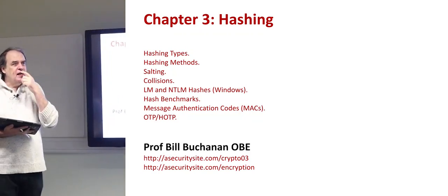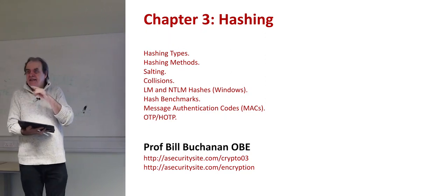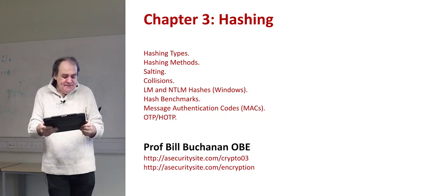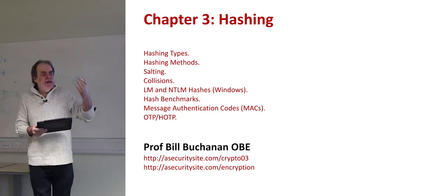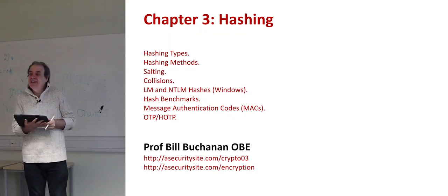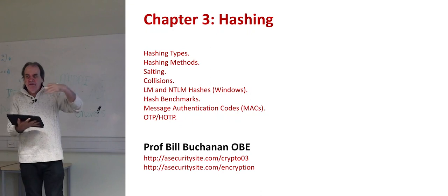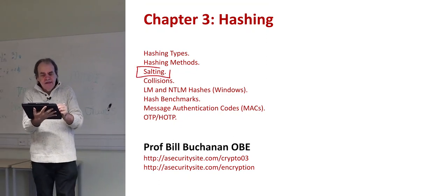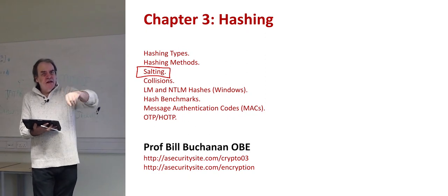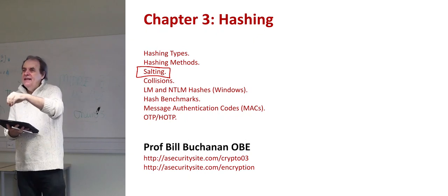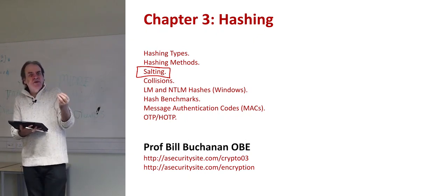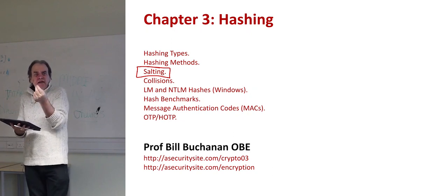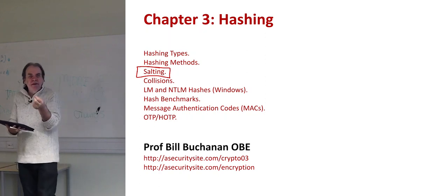Week 3. Last week we did symmetric key encryption; this week we're going to look at hashing and MACs. We'll look at the fundamentals and the practical element in the lab. We're going to look at different types of hashing methods, and then look back at salting. Salting allows you to add salt to a key and produce an output that changes, overcoming problems of rainbow tables.